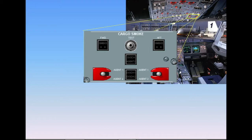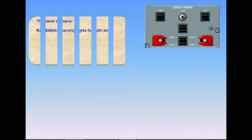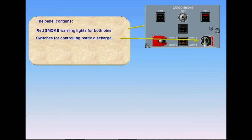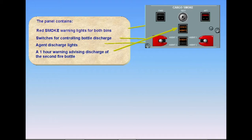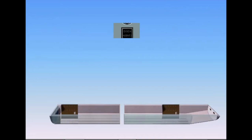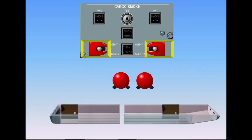On the overhead panel, there is a cargo smoke panel with the indications on cargo smoke. The system consists of the discharge nozzles and two fire bottles and is controlled through this panel. The panel contains red smoke warning lights for both bins, switches for controlling bottle discharge, agent discharge lights, and a one-hour warning advising discharge of the second fire bottle.